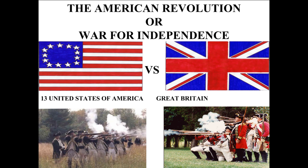Welcome to the American Revolution unit. This is Unit 3, and we're going to start section number 1, which is the Road to Revolution. We're going to look at all the events that led the English colonies to declare independence from Great Britain.